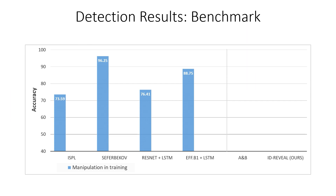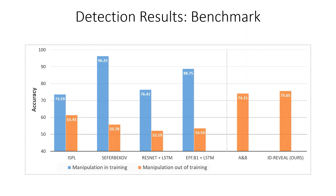We compare our approach to state-of-the-art forgery detection algorithms. As expected, supervised methods show good results when the type of manipulation is seen during training. However, performance drops dramatically for unseen manipulations. Our approach is trained only on pristine videos and does not have this issue.